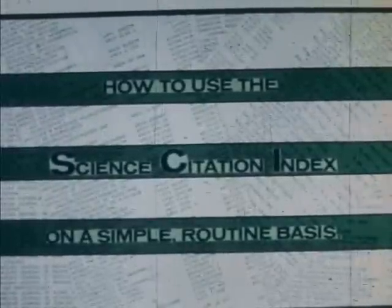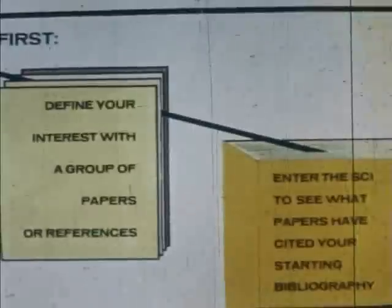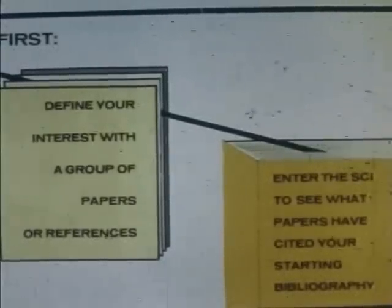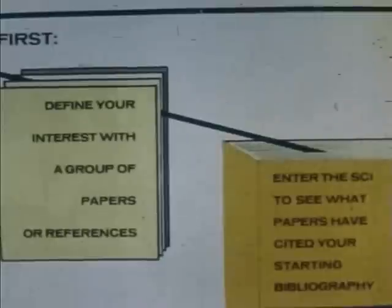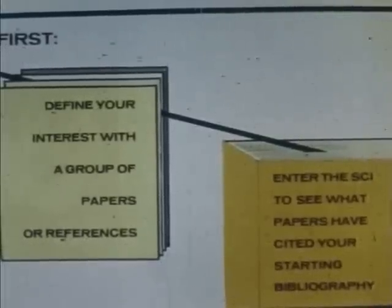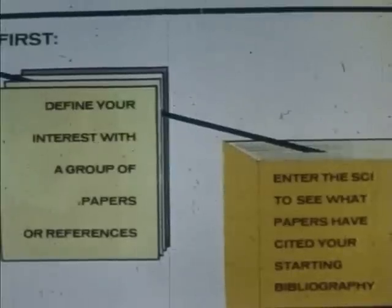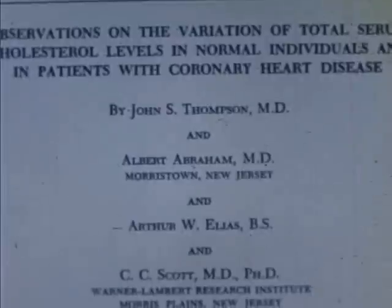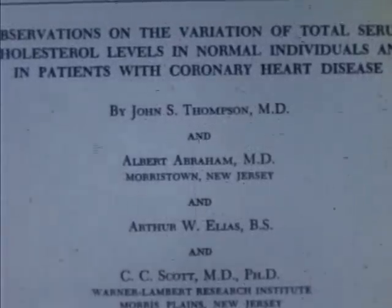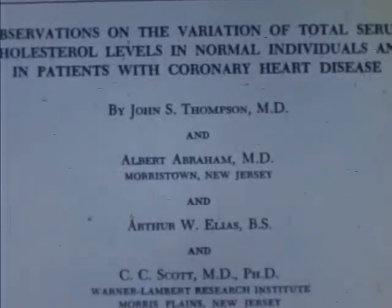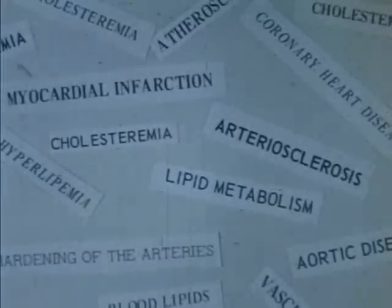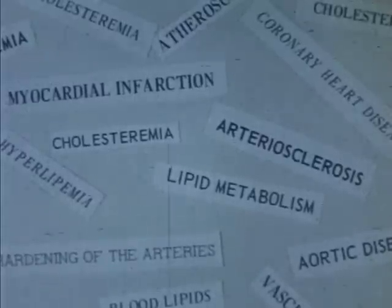As a final example of using the citation index in a routine fashion, let's consider this medical example. As in every search of the citation index, one must define a subject by one or more starting references. In the SEI, one finds the papers that had cited the items in the starting bibliography. Consider the following 1959 paper by J.S. Thompson on the problem of serum cholesterol levels in heart patients. To perform this specific search by traditional word-searching methods, one would have to examine this array of subject headings under which hundreds of articles would be listed, but most of them would be quite far removed from this very specific topic.